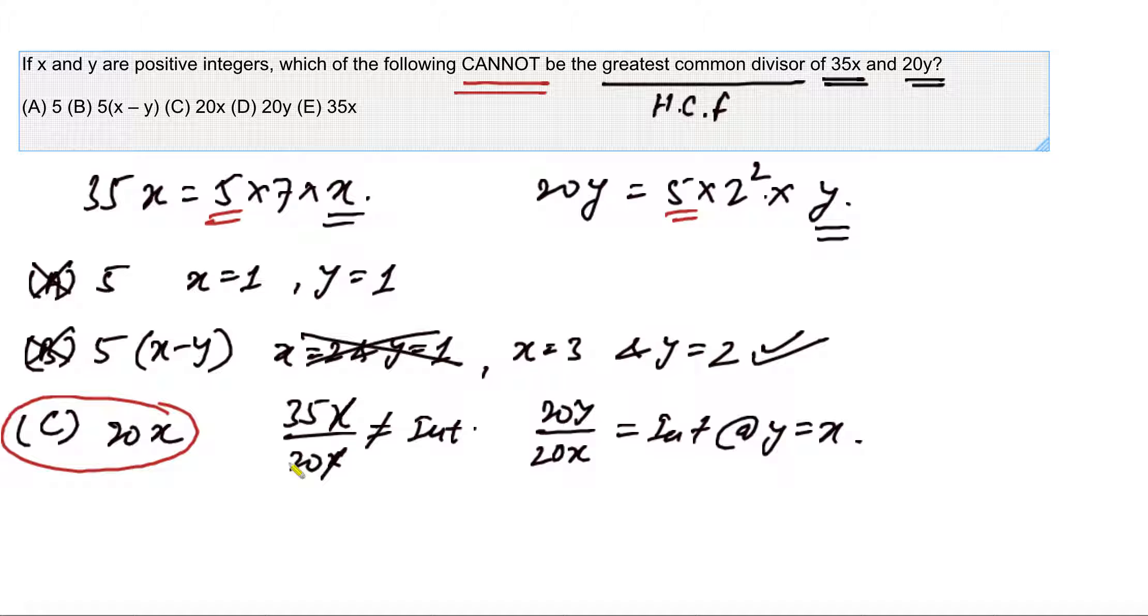However, in order to be more confident, I am going on and explaining why D and E options can be eliminated again. So option D says 20y. 20y means 2 squared times 5 times y, so obviously this 20y is the factor of the second number. But can 20y be the factor of 35x? The answer is yes if x becomes equal to 2 squared times y.